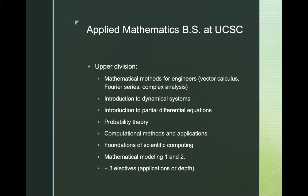The upper division requirements for this undergraduate degree include mathematical methods for engineers, where you'll learn vector calculus, Fourier series, and complex analysis. An introduction to dynamical systems course, in which you will learn about coupled ordinary differential equations. An introduction to partial differential equations, in which you will learn to solve differential equations in more than one variable. Probability theory. And computational methods and applications, in which you will learn basic algorithms for applied mathematics.